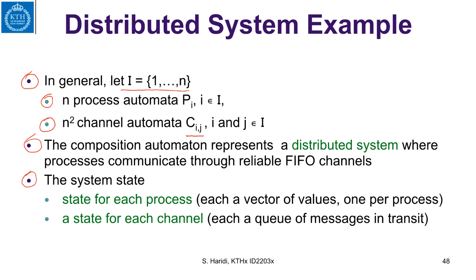is the state for each process and each process plus the state for each channel. In each process, if we took the previous example, it would be a vector of values, and the state for each channel would be a queue of messages in transit.